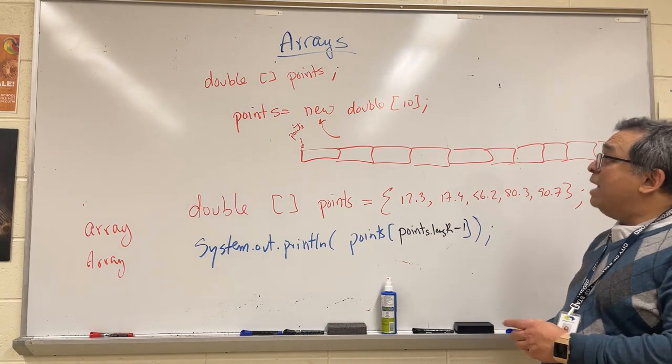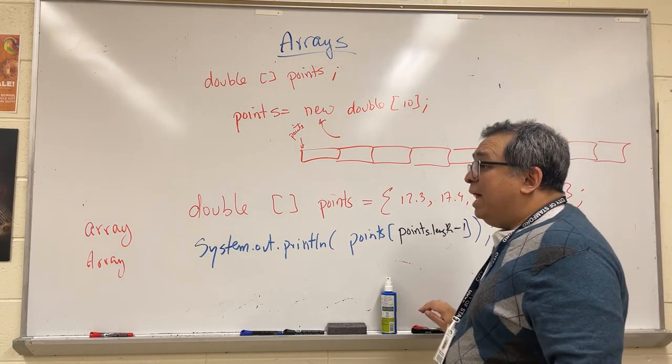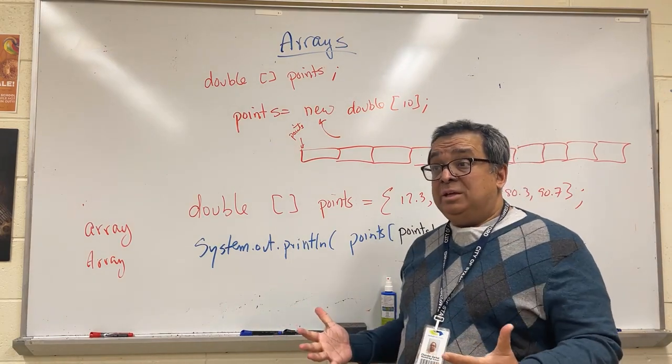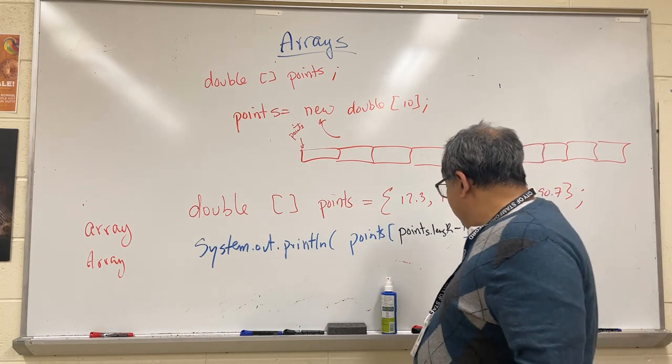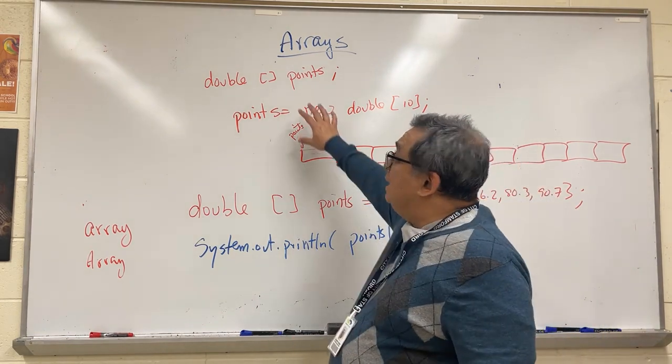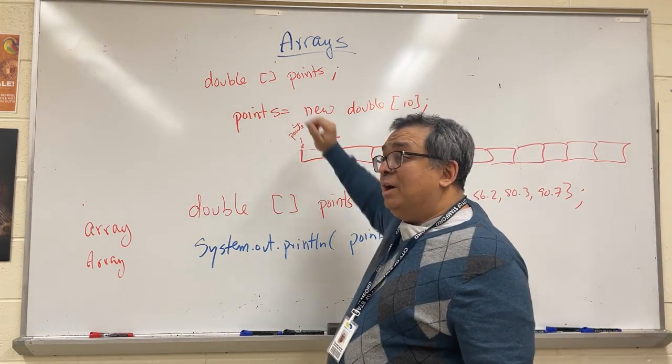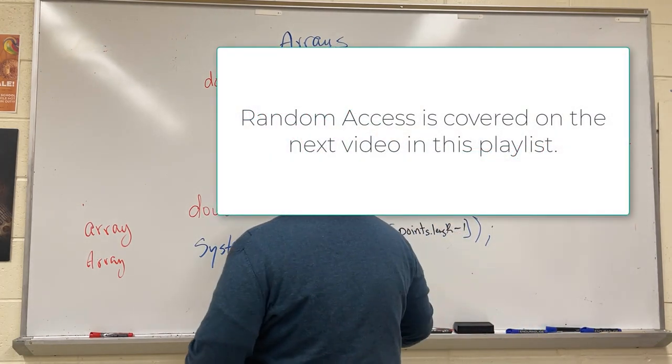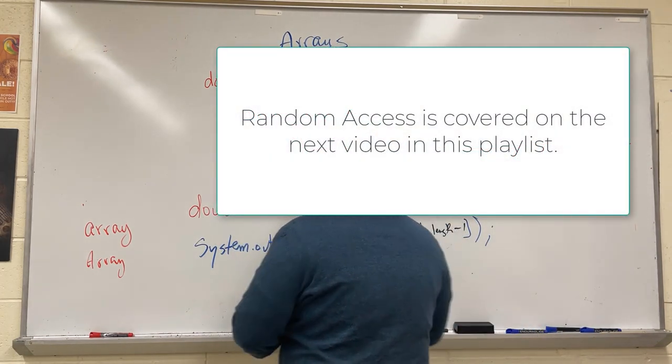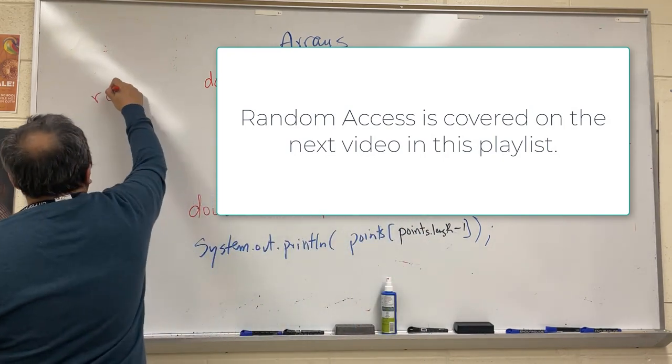Now having it be next to each other has one huge advantage and one huge disadvantage, and that's what I'm going to talk about next. The reason why people like arrays so much in Java is that arrays have a special property called random access.